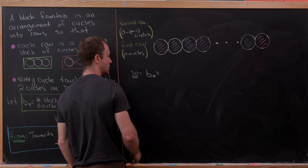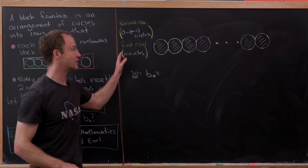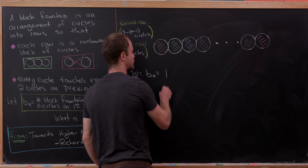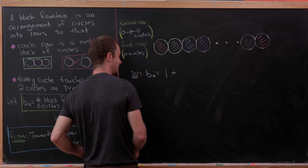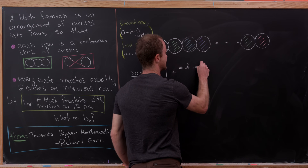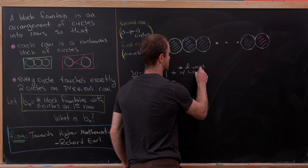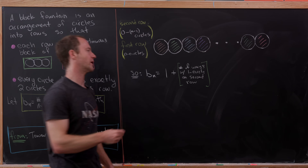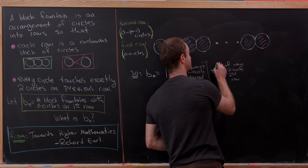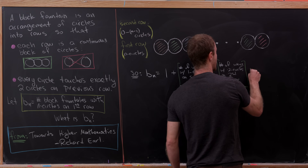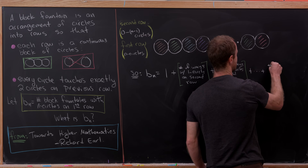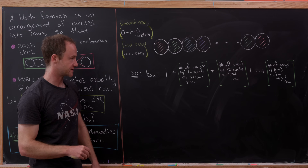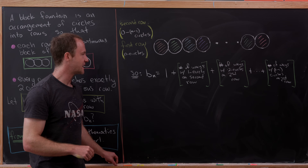There is exactly one way to put zero circles on the second row — just leaving it open. So we start with 1 plus the number of ways with one circle on the second, then the number of ways to put two circles on the second row, all the way up to n minus one circles on the second row.